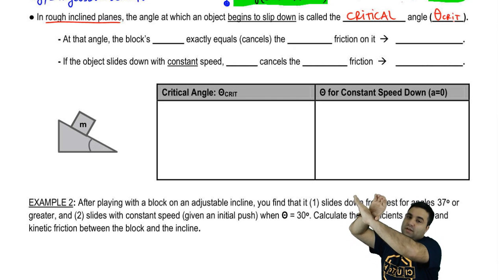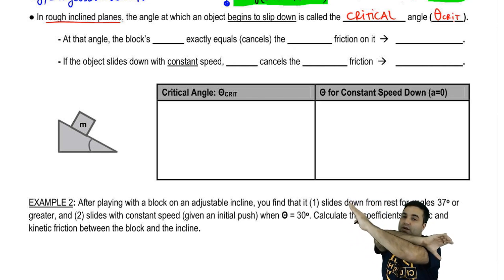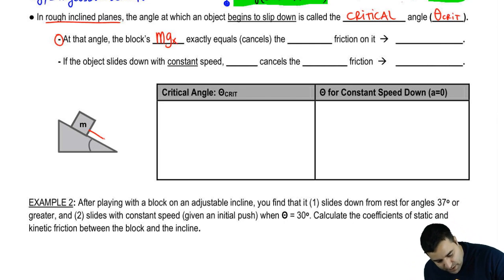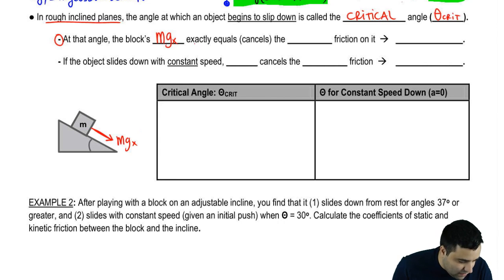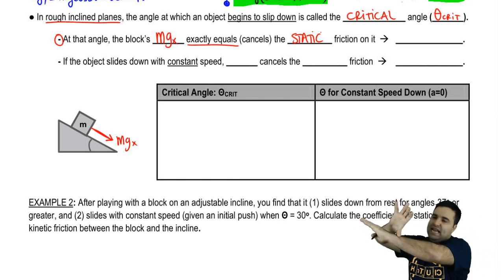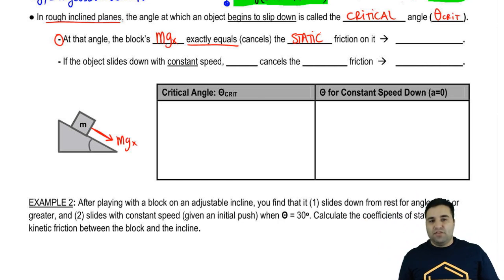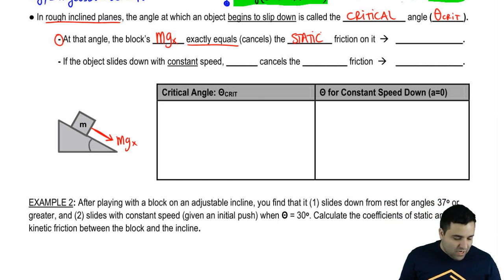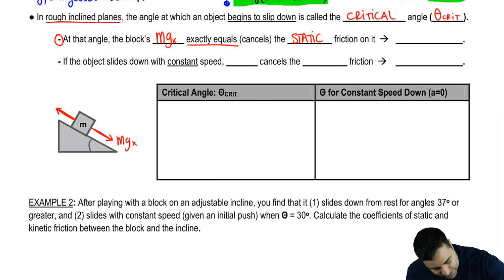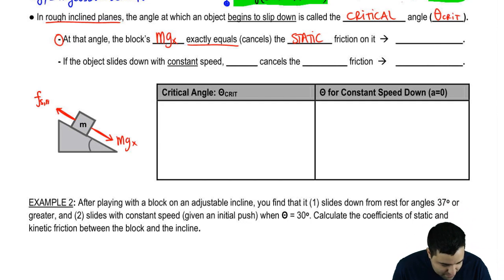As you keep tilting slowly, there will eventually be an angle at which the object starts to move — that's the critical angle. What's special about that angle is that the block's mgx, the component pulling it down the slope, will exactly equal and cancel the static friction. Just before it starts moving — say it starts at 37 degrees — at 36.99 degrees, approximately at that angle, these two forces were exactly the same.